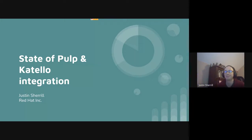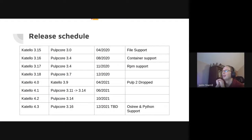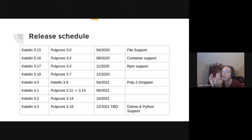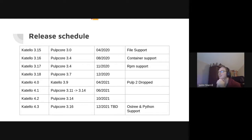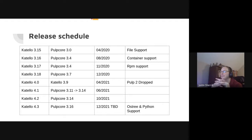First, I wanted to recap what our releases have looked like over the past year and a half. It was more releases than I actually remembered — I had to go back and dig through release notes and repositories. We've been integrating with Pulp 3 since Cotillo 3.15, which was in April of 2020, and in Cotillo 4.0, a year later, we completely dropped Pulp 2.